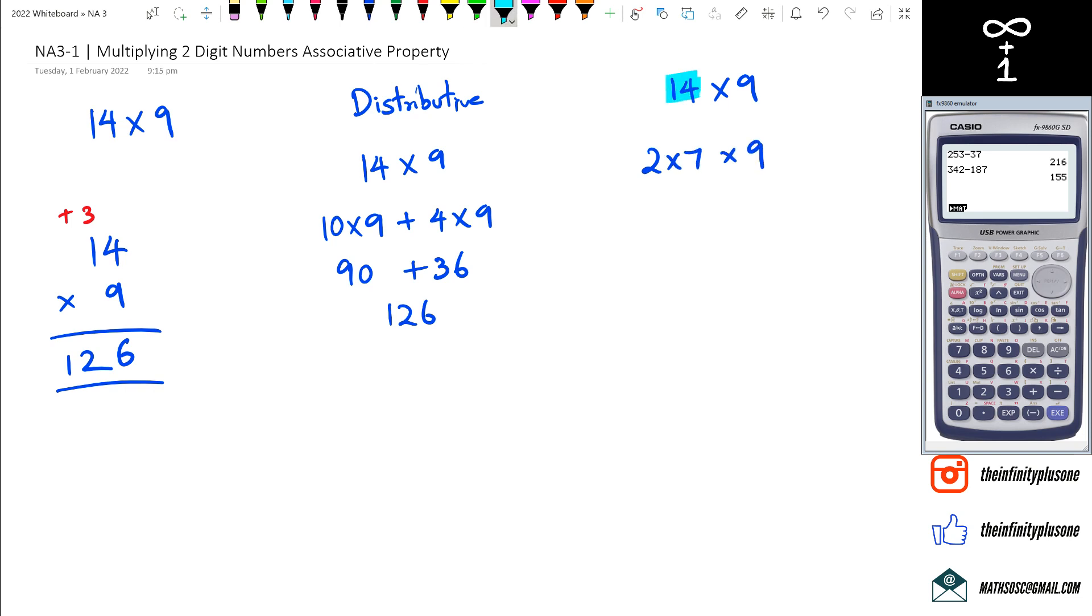So if you guys notice, what I've done is I've taken this 14 and I've split it up as 2 times 7. The reason I did this was because I know my 9 times 7 from the times tables. So I know that 9 times 7 is 63, so then I can rewrite this as 2 times 63.